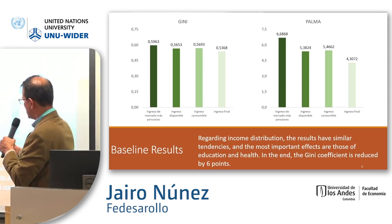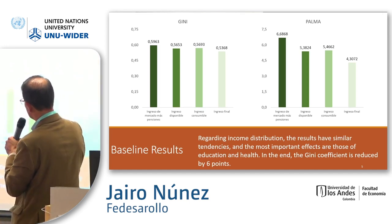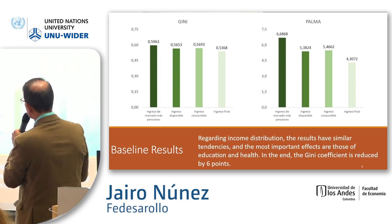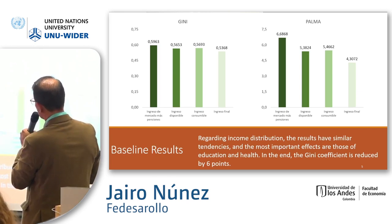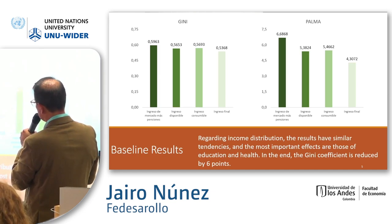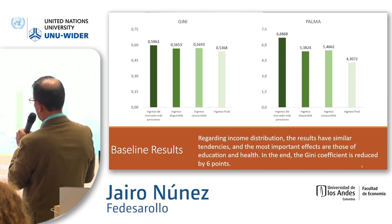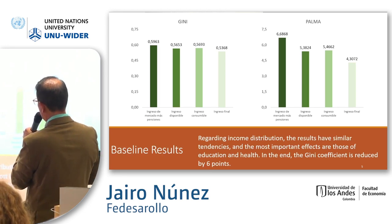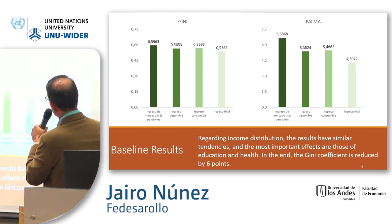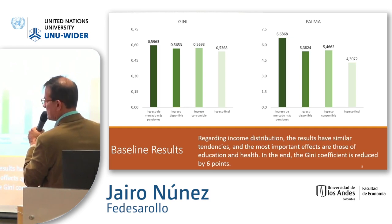Regarding income distribution, we start the Gini coefficient in Colombia from 0.59. The results have the same tendencies, and the most important effects are those of education and health. The Gini coefficient is reduced by six points.